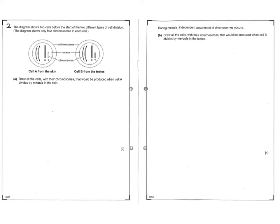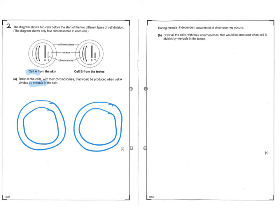This question caught a few people out. If we look at the information, it tells you there's four chromosomes in each cell. Cell A is from the skin, and you're asked in part A what would happen if cell A divided by mitosis. So mitosis - you know that you get two daughter cells. The key thing is that the daughter cells are genetically identical to the parent cell.